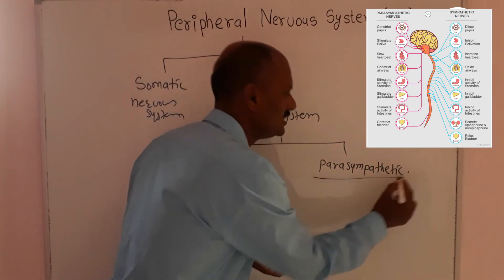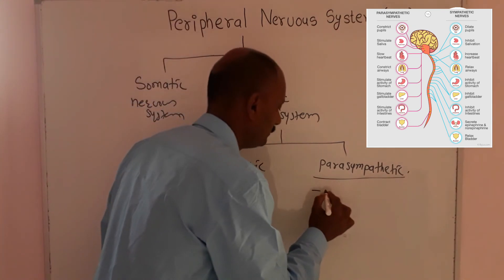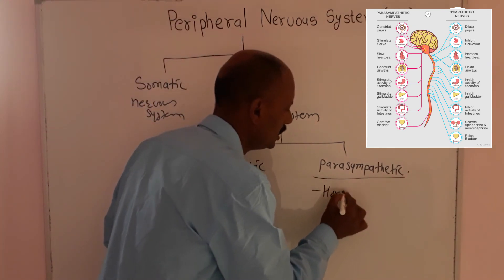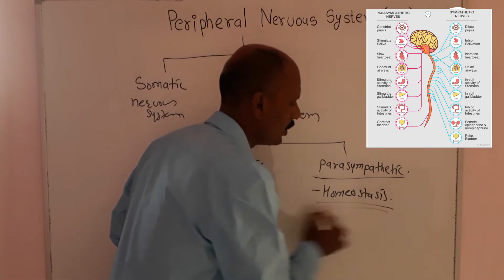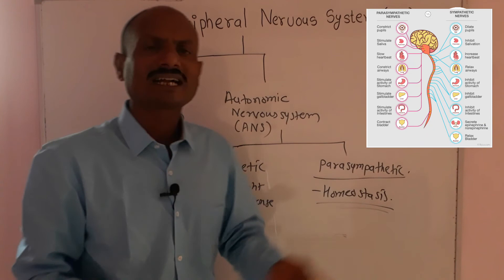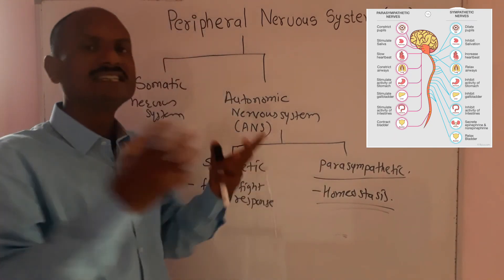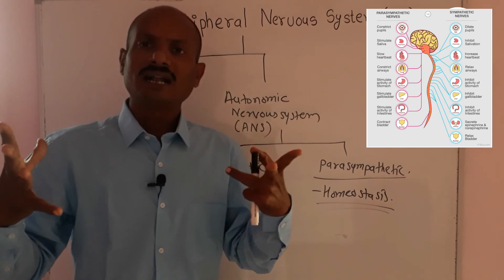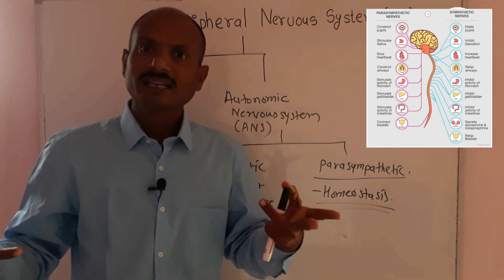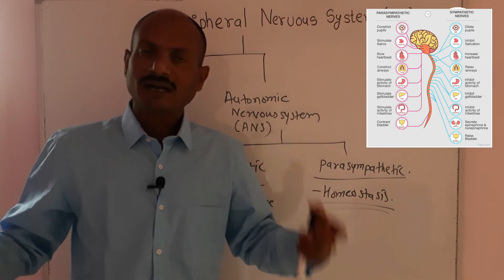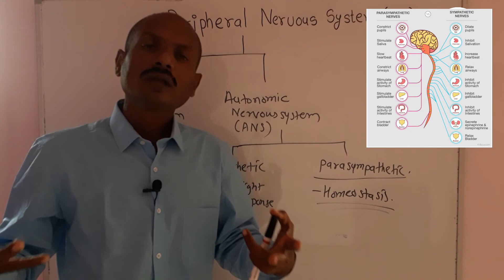The parasympathetic nervous system restores the body to calm and brings about homeostasis. After we survive the critical condition, our heart rate and respiratory rate were elevated. The blood supply was directed more to our legs than to other organs — all of this needs to be normalized.